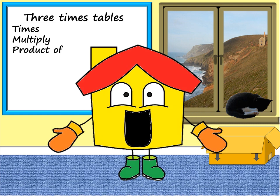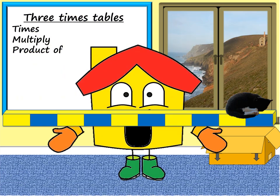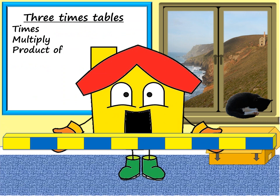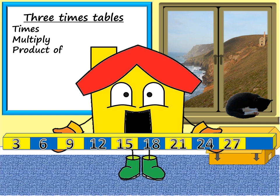We're going to use our counting stick to help us count on in threes by repeatedly adding three like this. Three, six, nine, twelve, fifteen, eighteen, twenty-one, twenty-four, twenty-seven, thirty.